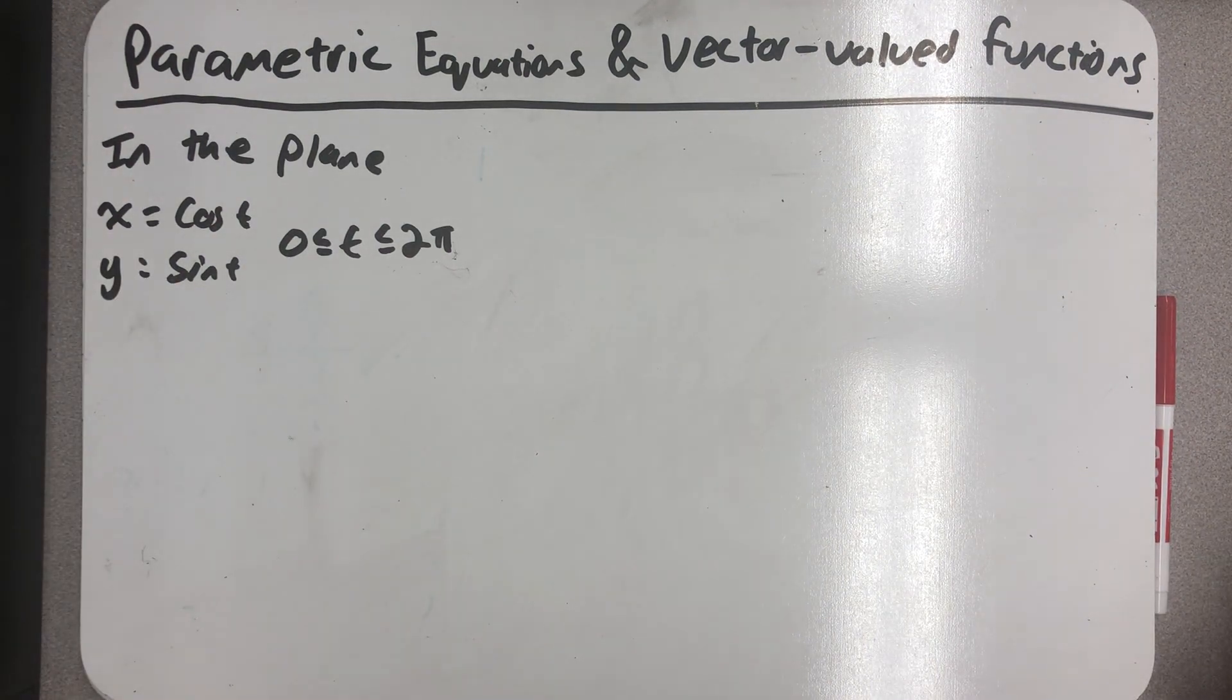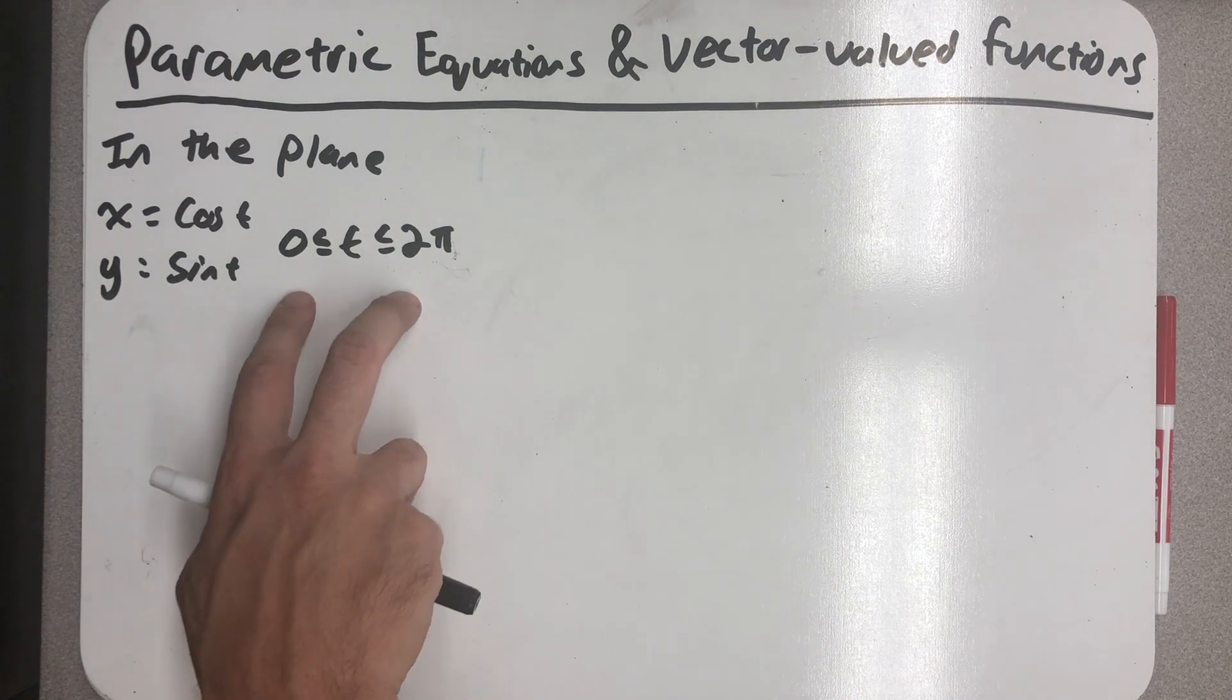So let's take this set of parametric equations: x equals cosine t and y equals sine t, with the parameter interval from 0 to 2π.